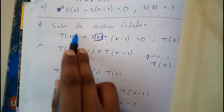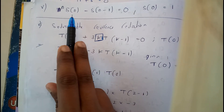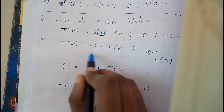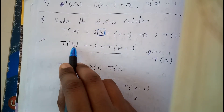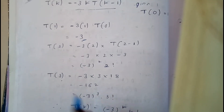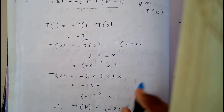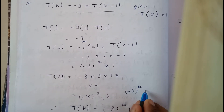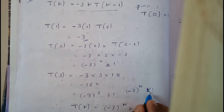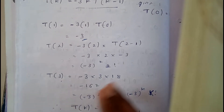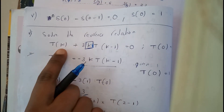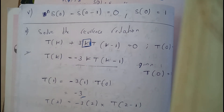We need to find t(k). Instead of the standard approach, we substitute values directly. Substituting k = 1, I get −3. For k = 2, I get (−3)²·2!. For k = 3, I get (−3)³·3!. The pattern gives t(k) = (−3)^k · k!. If something extra is given in the question, just substitute the values to find the pattern — nothing more than that.